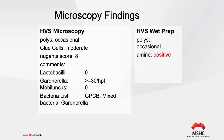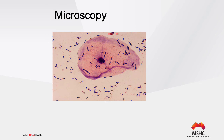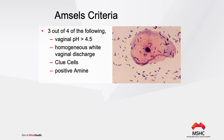The lab reports occasional polys, a moderate number of clue cells, a Nugent score of 8, no lactobacilli, Gardnerella at more than 30 per high power field, no Mobiluncus, a positive amine test, and polys on the wet prep. On microscopy, a large clue cell with rod-like bacteria inside is visible. Applying Amsel's criteria: vaginal pH more than 4.5, homogenous white discharge, clue cells on gram stain, and positive amine test — this patient has bacterial vaginosis.